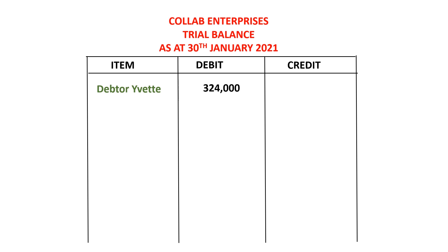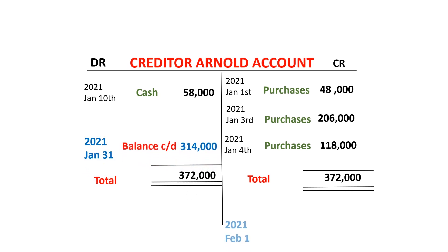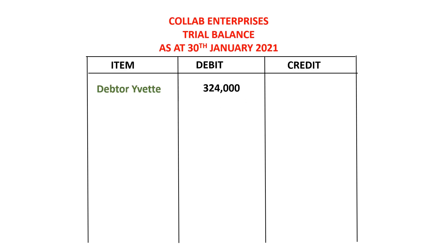Let's look at the case if it was a credit balance. We have here a creditor account. A creditor is a liability account, and all liability accounts have credit balances. From here, you can see that the credit side is bigger than the debit side. If we are to balance this off, the balance carried down is 314,000 and the balance brought down is also 314,000. This is a credit balance — the credit side of this account is bigger than the debit side by 314,000. Because it has a credit balance of 314,000, this is how we post it in the trial balance: we write the name of the account — in this case, the creditor account — and then we write the credit balance in its column.